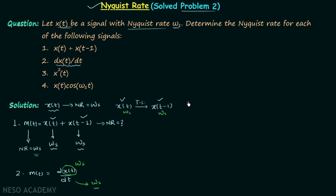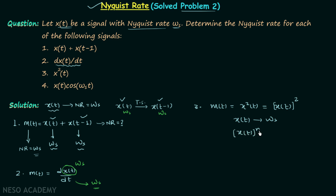Now let's move on to the third message signal: m(t) = x²(t), or x(t) whole squared. We know the property that if x(t) has Nyquist rate ω_s, then x(t)^n will have n·ω_s as the Nyquist rate. Here n = 2, so the Nyquist rate of this signal is 2·ω_s — twice of ω_s.